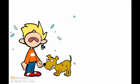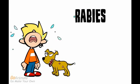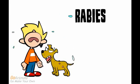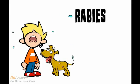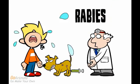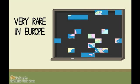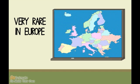Rabies is a disease caused by a virus. People usually get rabies from the bite of an infected animal. Your pets like dogs or cats must be vaccinated against rabies. Rabies is very rare in Europe, but there is a chance of your pet having rabies especially if you took them to another country like India or Africa on vacation.